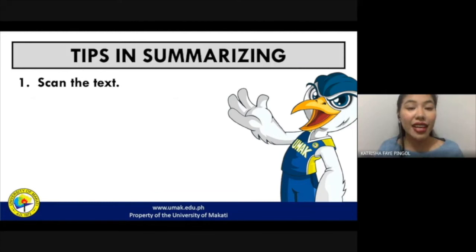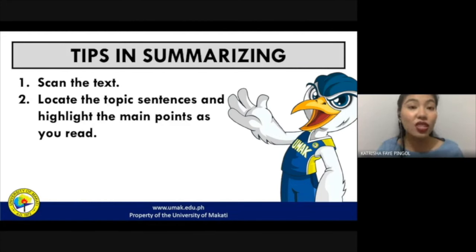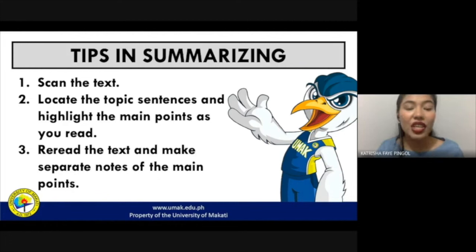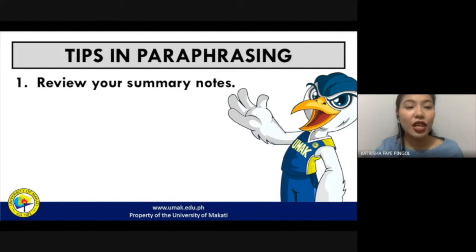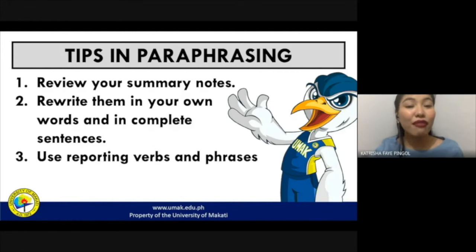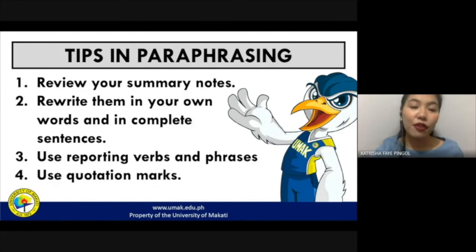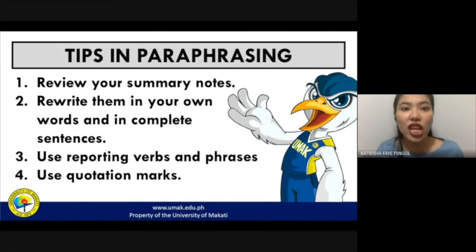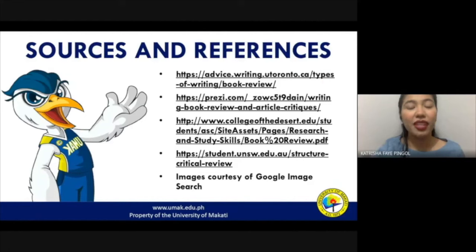Some tips in summarizing: first, always scan the text and locate topic sentences, highlighting the main points as you read. Then reread the text and make separate notes of the main points, since in summarizing we are only after the main ideas — and when put together, they form a summary of the longer text. For paraphrasing: review your summary notes first, then rewrite them in your own words in complete sentences. Use reporting verbs and phrases. If you find it difficult to paraphrase certain words or ideas, utilize quotation marks to avoid plagiarism.